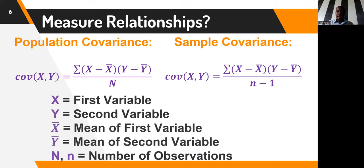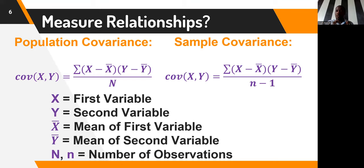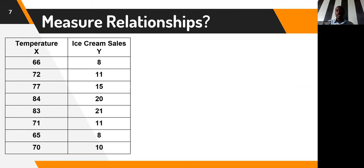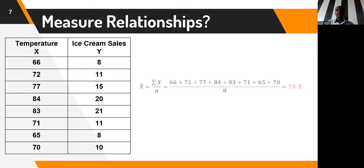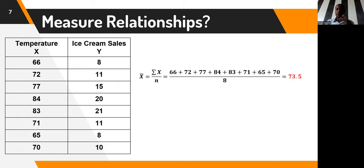When it comes to population covariance and sample covariance, x and y are simply the two variables for which we want to measure how associated they are. X-bar represents the mean of the first variable x, y-bar represents the mean of the second variable, and n — whether uppercase or lowercase — is simply the number of observations: uppercase for the population and lowercase for the sample.